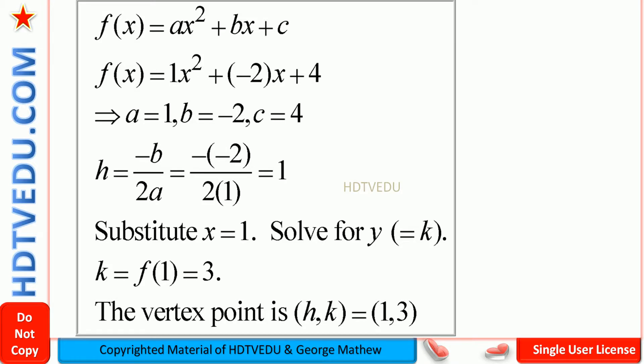We are given the function f of x is equal to x squared minus 2x plus 4. What is a? When nothing is written next to x to the power of 2, it is 1. So a is equal to 1.